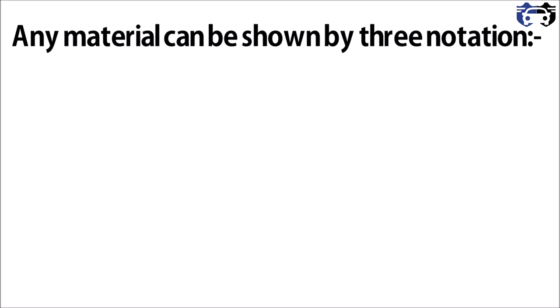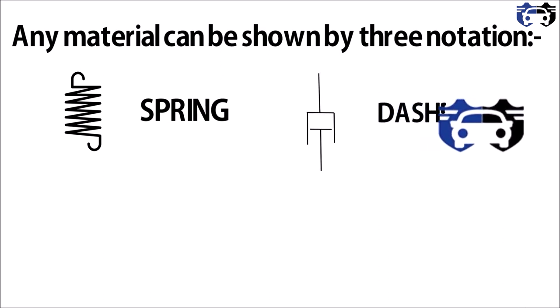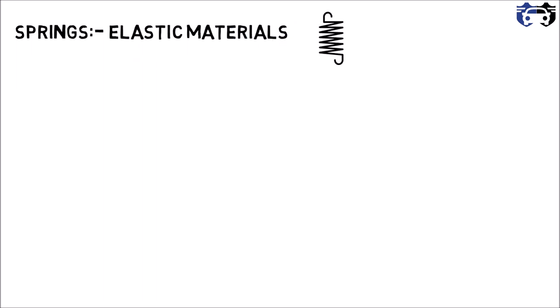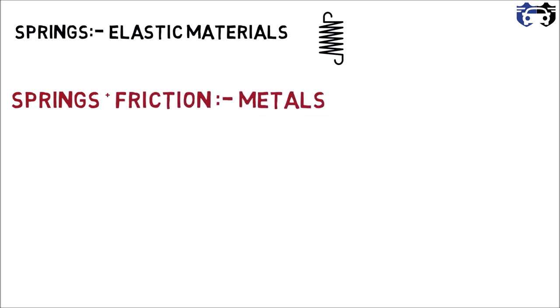Any material can be represented by three notations: the spring, the dashpot, and friction. The spring represents stored and released energy. The dashpot — also known as a damper — stores energy but then dissipates it. Elastic materials like metals are shown by the spring symbol because they are elastic in nature. Metals can also be shown by a combination of spring and friction in parallel or series.